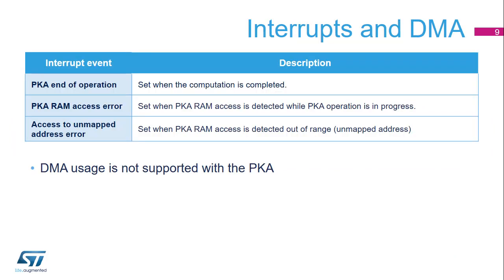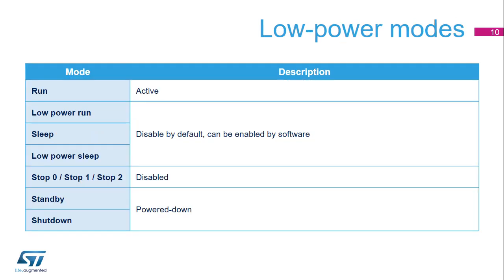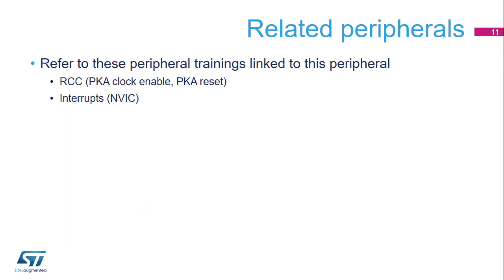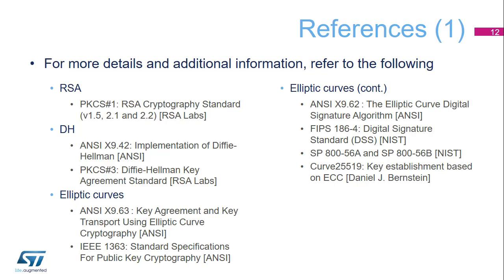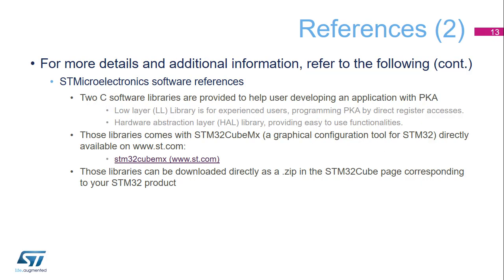Here is a summary of the PKA events able to trigger an interrupt in the Nested Vectored Interrupt Controller: PKA computation completed, PKA RAM access error, and access to unmapped address error. The Direct Memory Access (DMA) controller cannot be used with the PKA. PKA operations are not possible when the device is in stop mode. This is a list of peripherals related to the PKA — please refer to those peripheral trainings for more information. For more details, refer to the PKA driver in the STM32 CubeMX repository and the following useful software references.